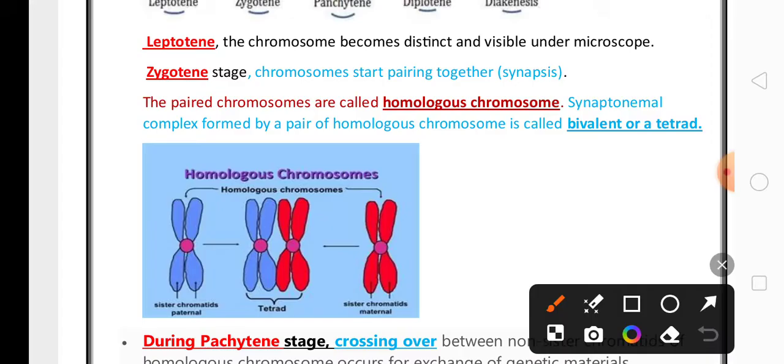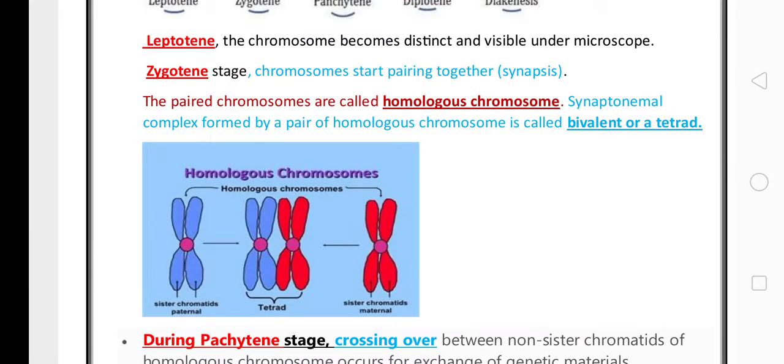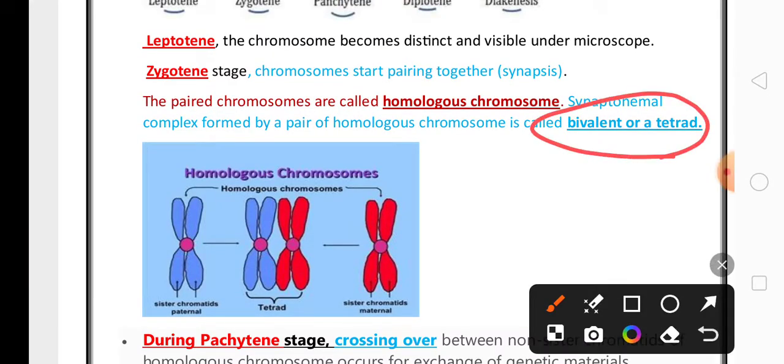The definition of homologous chromosome is also very important. The paired chromosomes are called homologous chromosomes. In leptotene, we can find the formation of tetrad, bivalent, or tetrad.